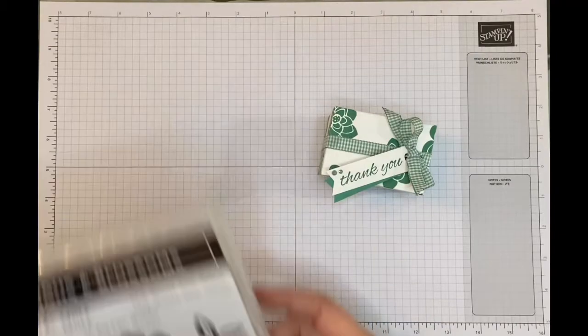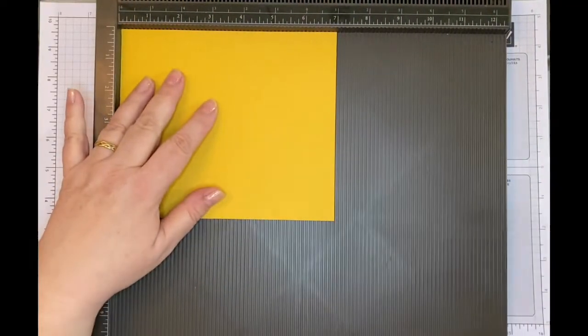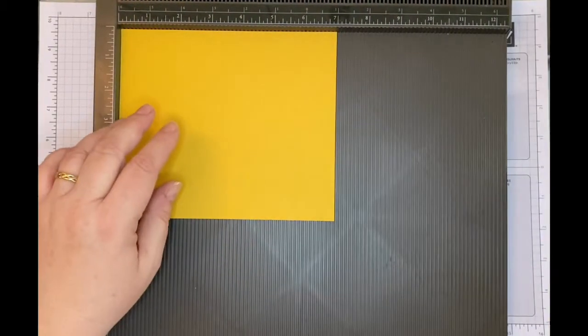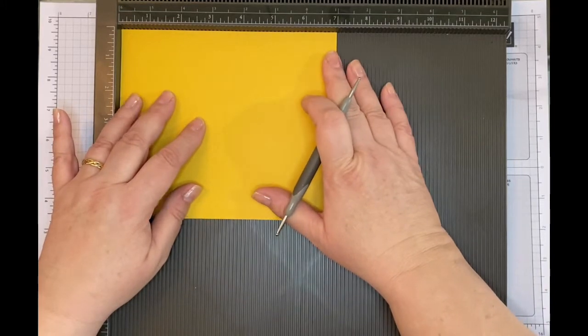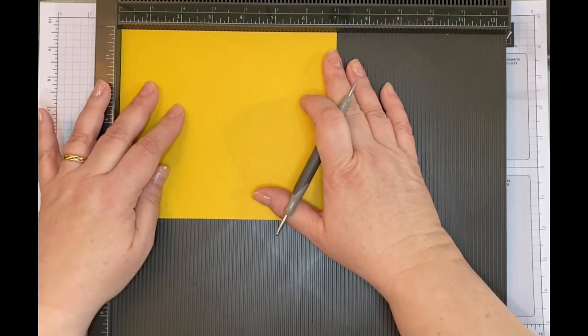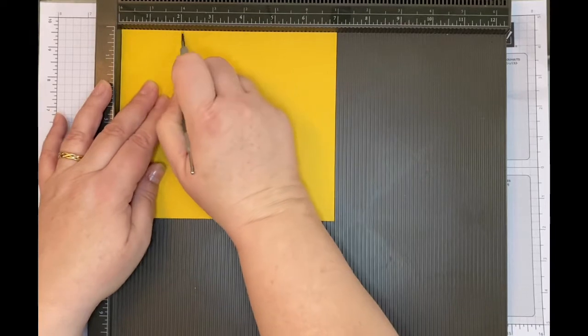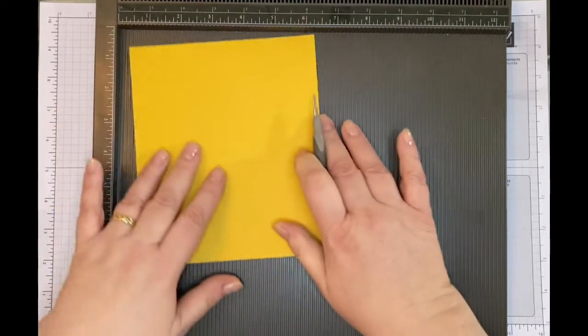So without further ado, this is the base of the box and I've chosen to use Bumblebee for this. This measures seven inches by six inches, and I'm going to score it along the two-inch line on all four sides.